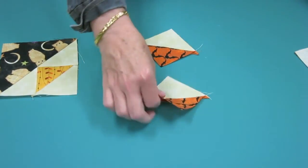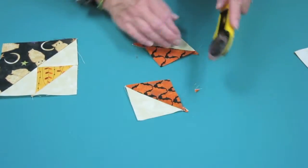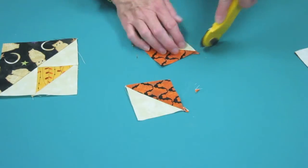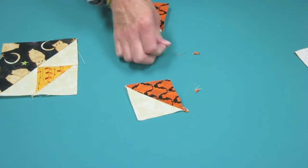Then I'm going to trim off my rabbit ears, like so, or a pair of scissors, if you're nervous about that.